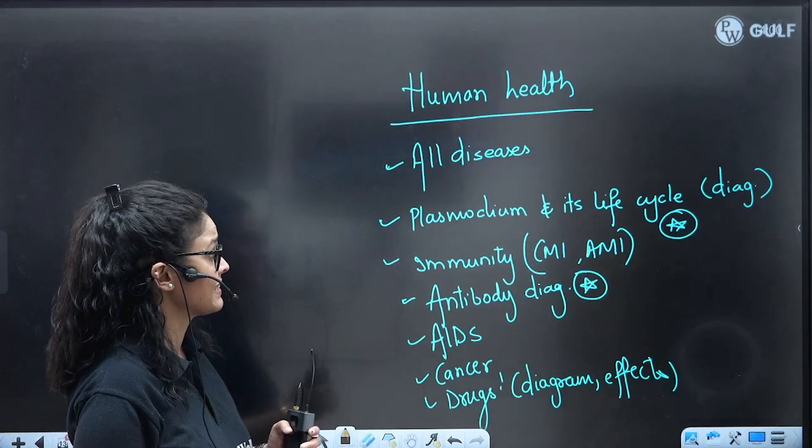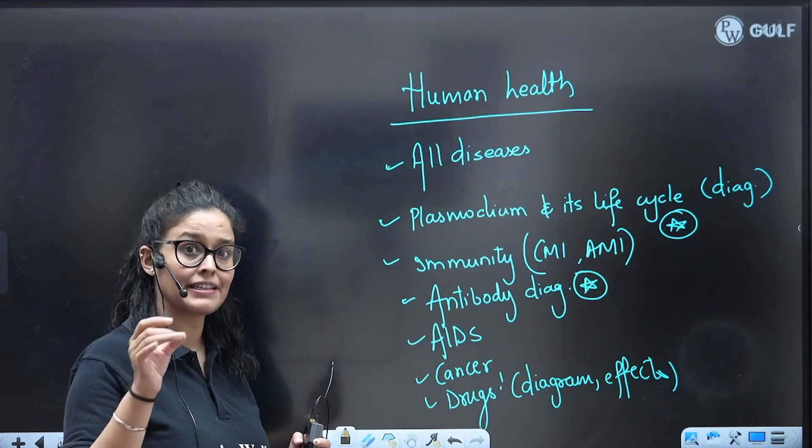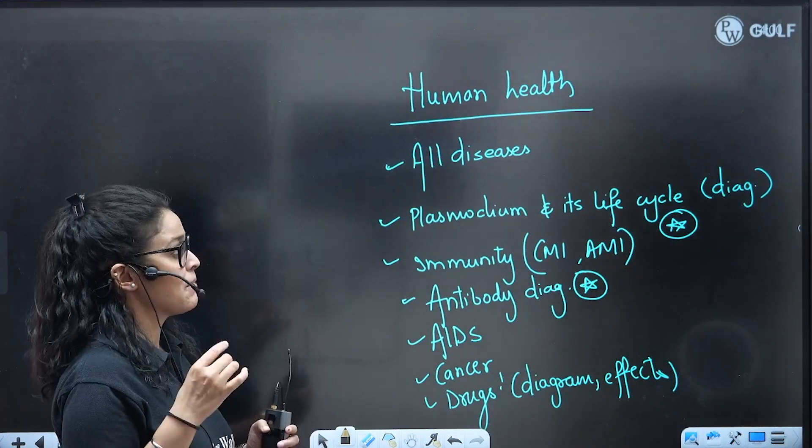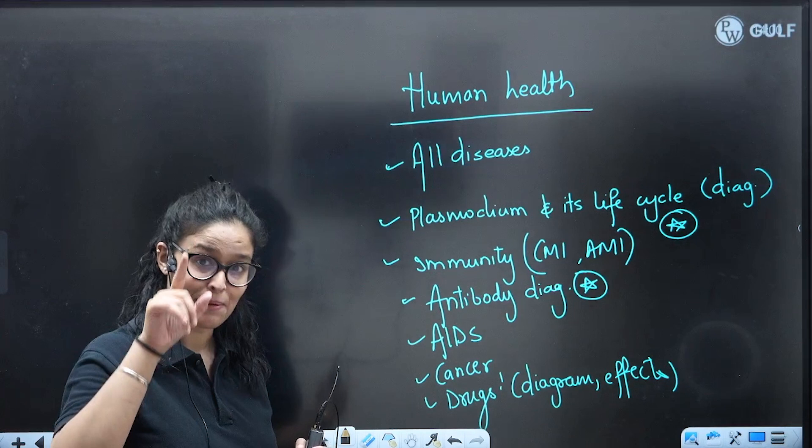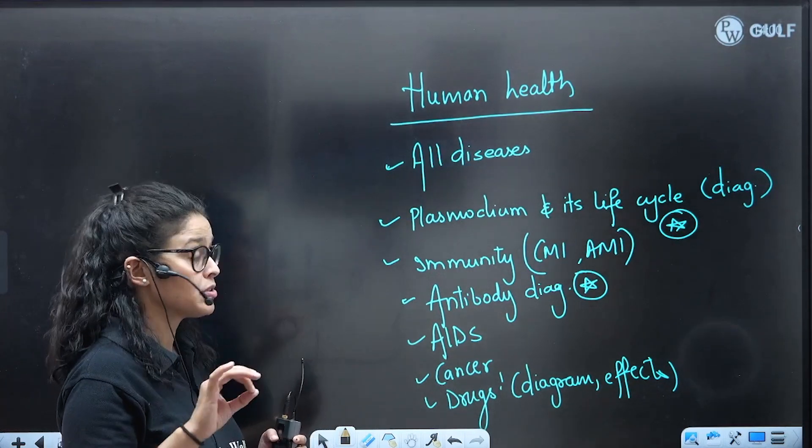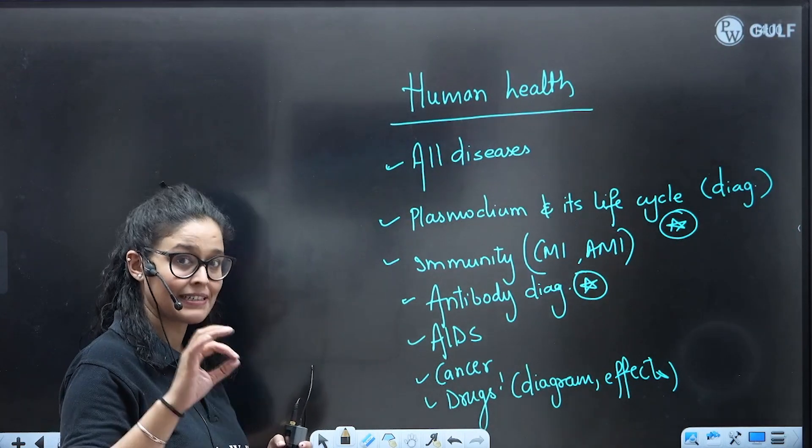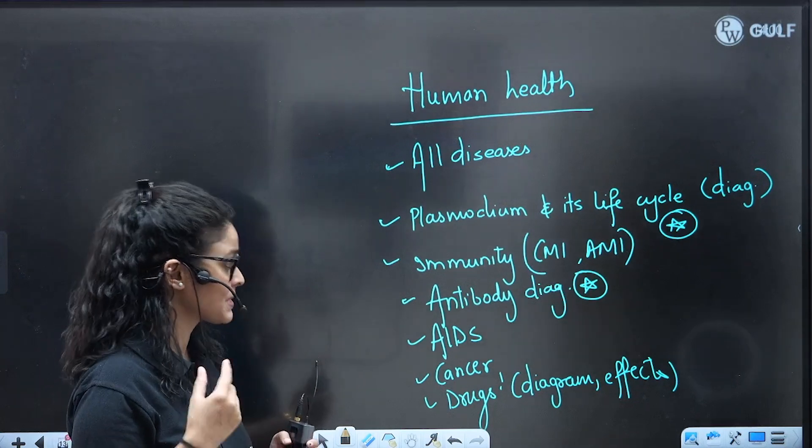Next, Human Health: all diseases and their symptoms and pathogens are important. Plasmodium and its life cycle diagram-based questions you will find. Immunity - CMI, AMI - cell-mediated and antibody-mediated immunity. Antibody diagram is important.